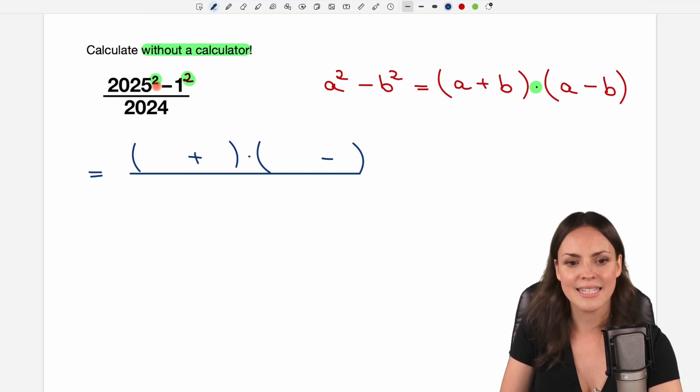And then we just take the numbers without the squares, and the 2025 goes in here first and also here. And then the second number without the square, the one, goes in here and here. And we don't change anything with the 2024.